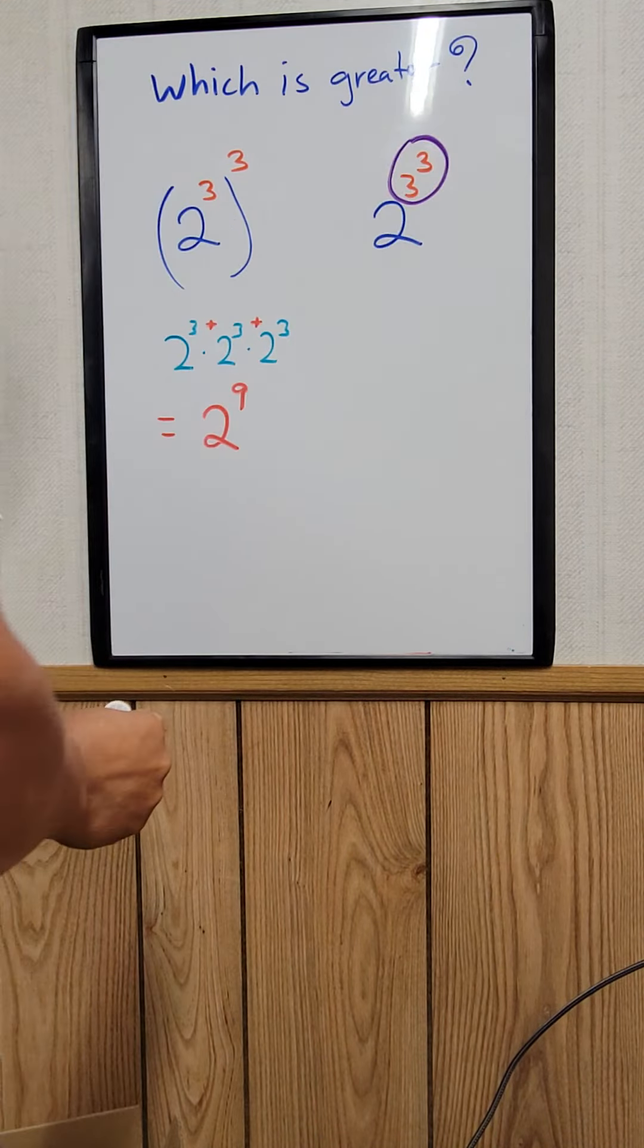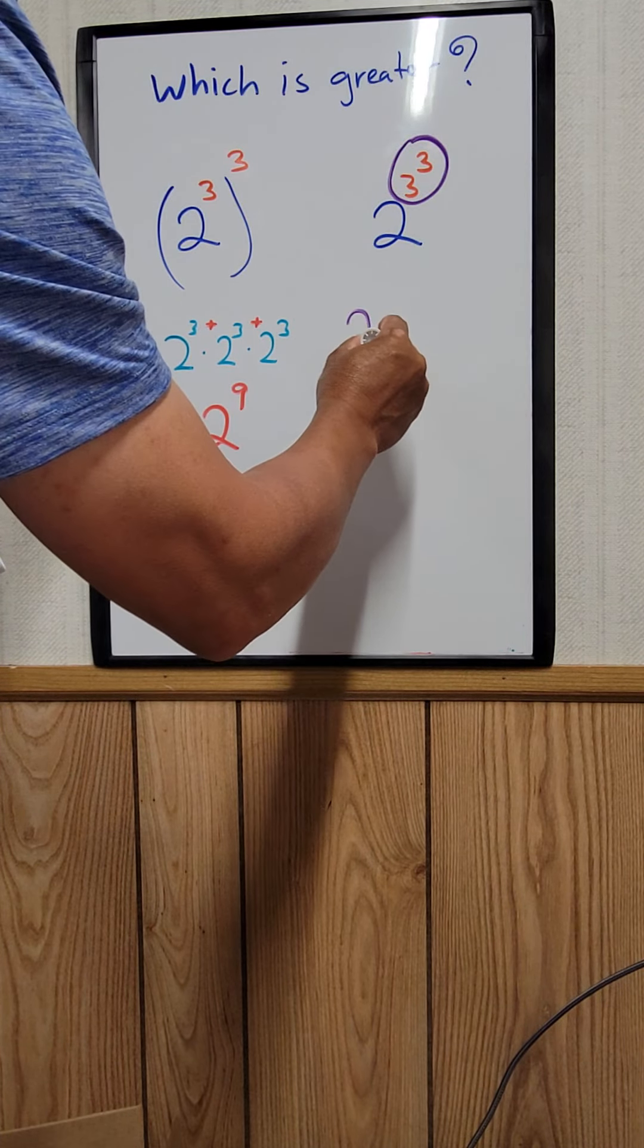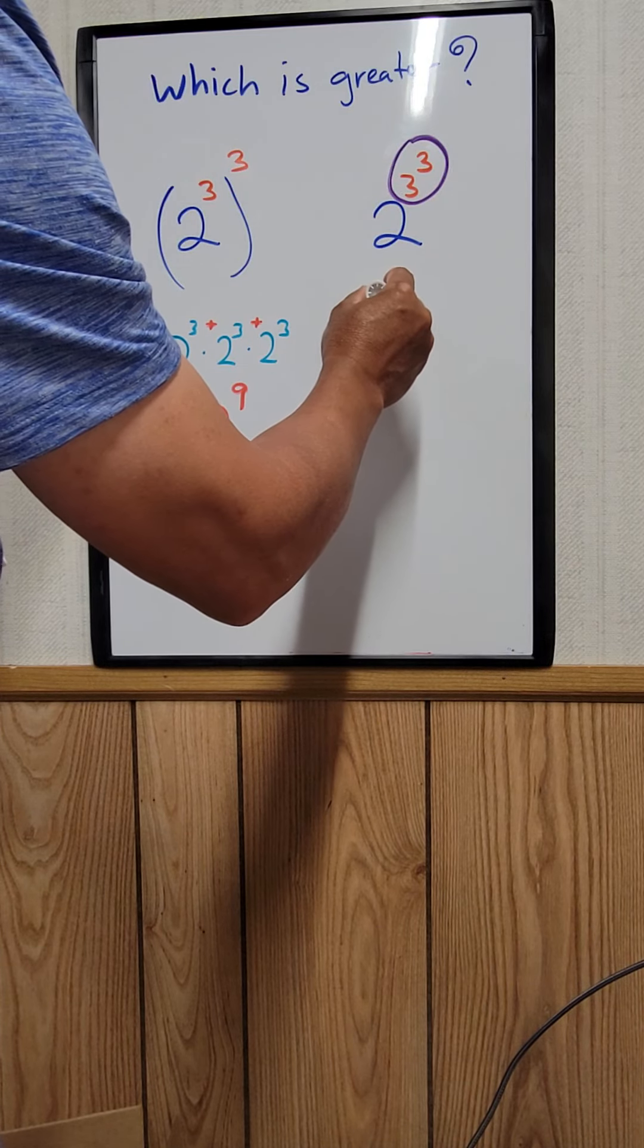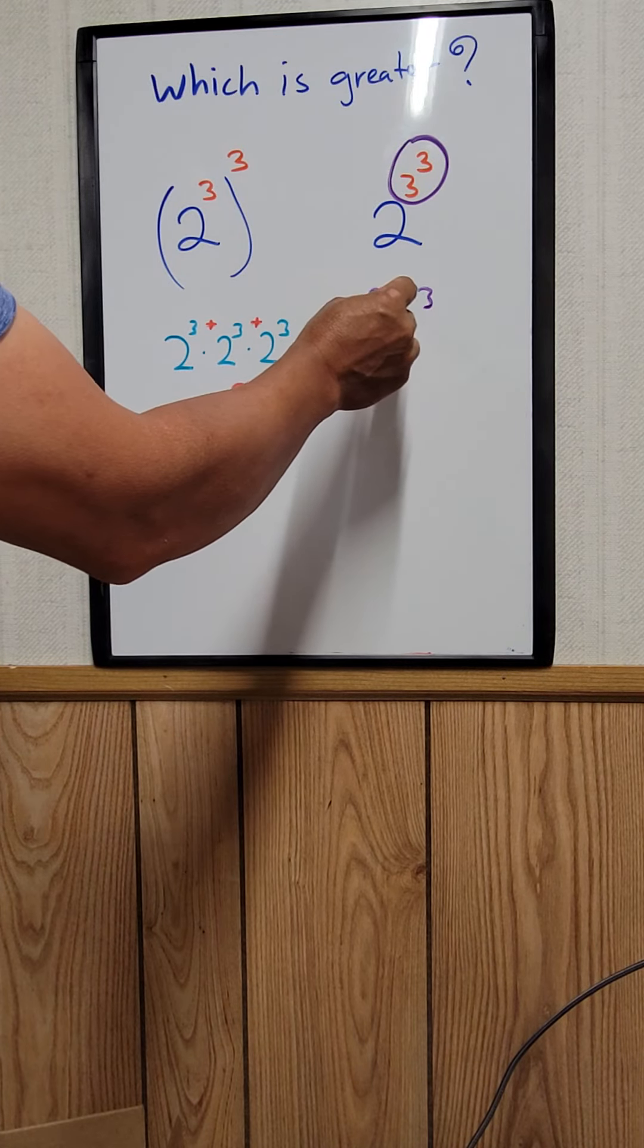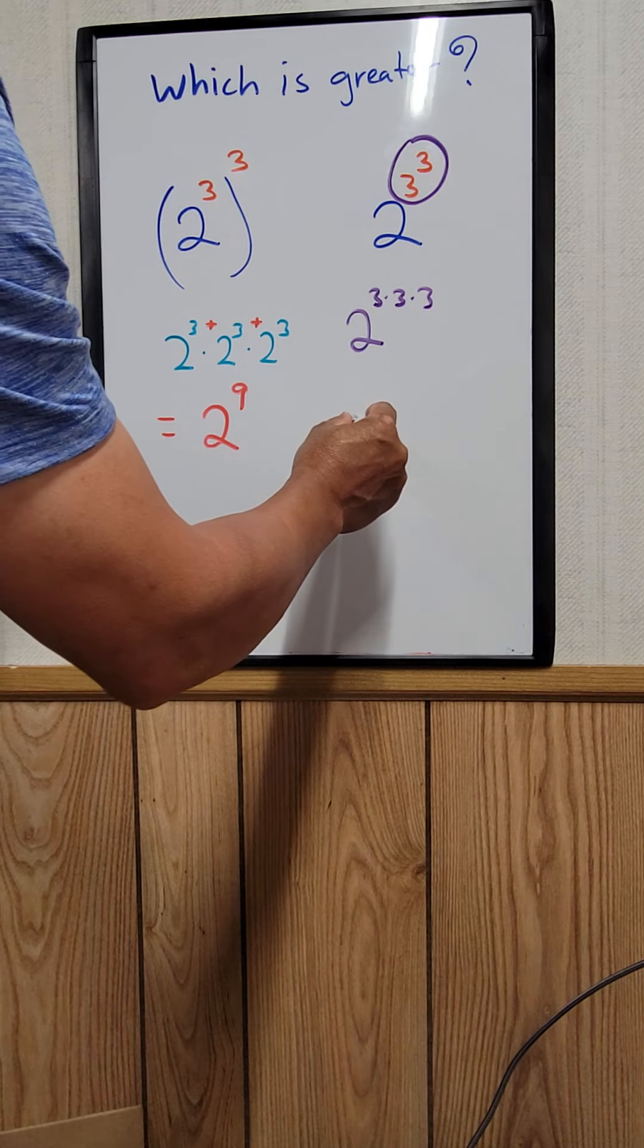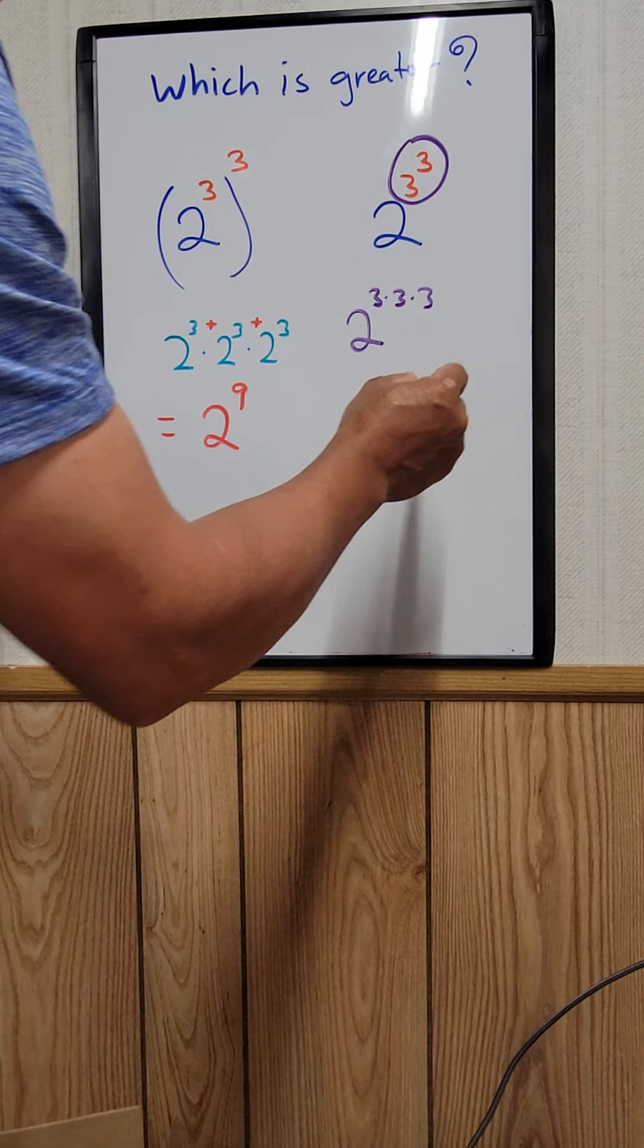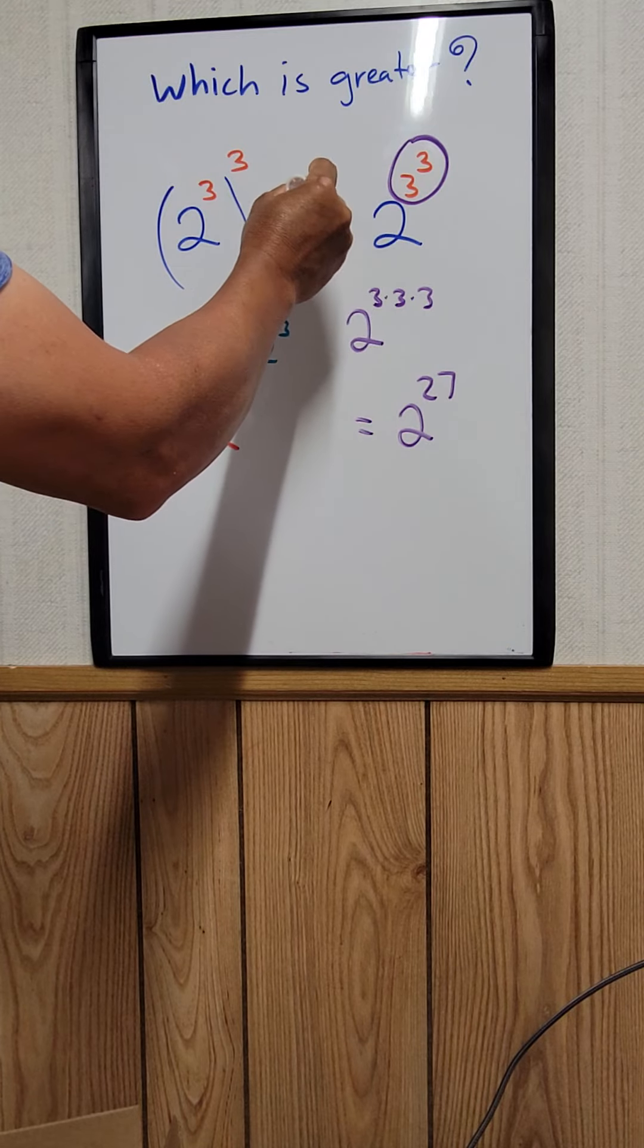What is 3 times 3 times 3? That will be 27. That's just equal to 2 to the 27. So as you can see, this one is greater.